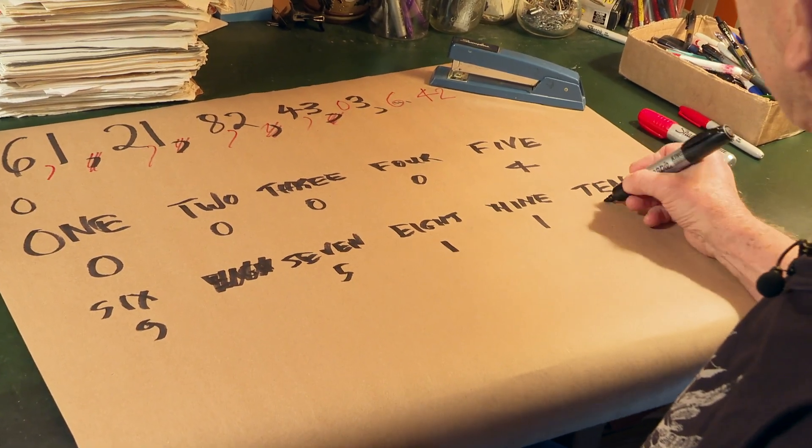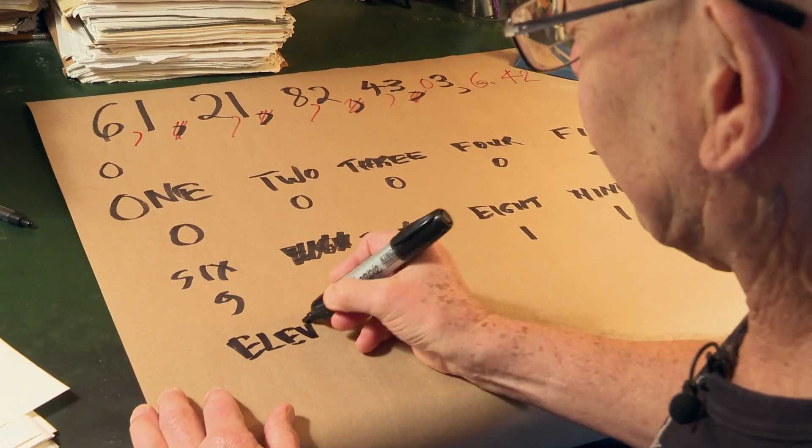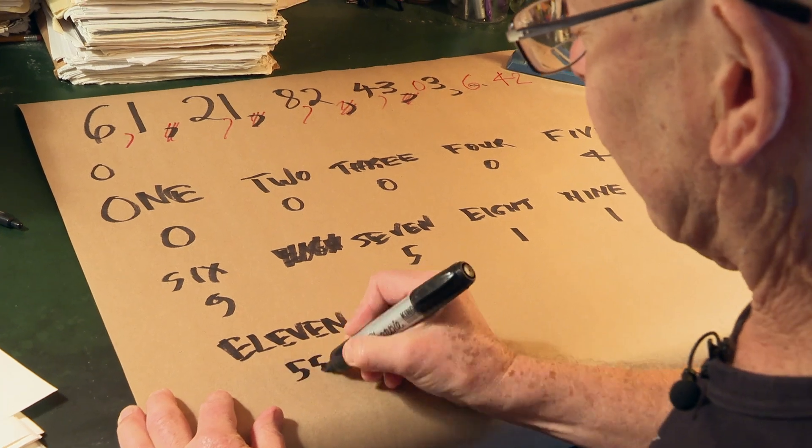10, I'll do a couple more to make it easier. 10, we get 0. 11, you'll never guess what we get for 11. 55. What's the rule?